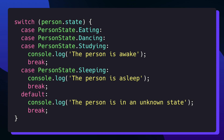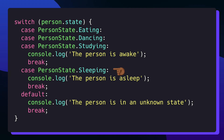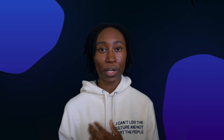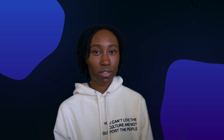Another interesting thing about switch statements is that you can create multi-cases, where you place cases next to each other to signify that the logic in one case block can be accessed by multiple cases. In this switch statement, I place three of my cases next to each other, and whenever my person's state is either eating, dancing, or studying, it's going to hop into that first case block. But if the person is sleeping, then it hops into the second case block. Personally, I don't think this is as readable as using regular pipe symbols, but it is something you can do with switch statements.